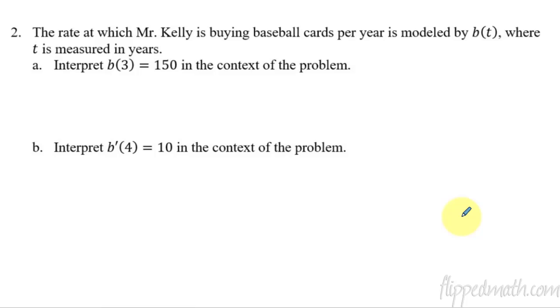Okay, let's do one more of these. This is a really short lesson and we now have this one's different because we are given a function that already represents a rate. So the rate at which Mr. Kelly is buying baseball cards per year is modeled by B of t. B of t is already a rate of change. Okay, so it's almost like this already is the derivative if you were used to thinking rate of change is a derivative. So interpret B of three equals 150. Well in this case we have that on the third year Mr. Kelly is buying cards at a rate of 150 cards per year. Again I use that phrase 'at a rate of' and then it's 150 cards per year.